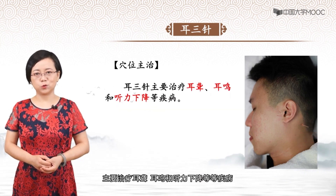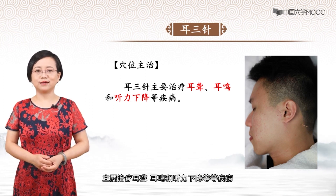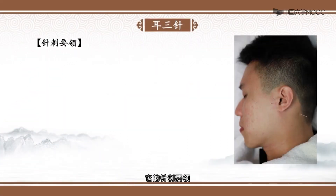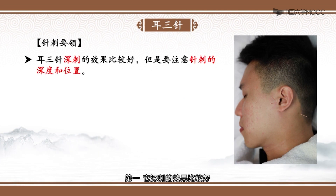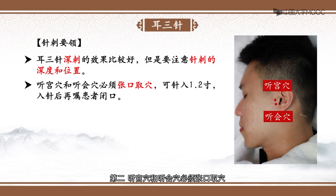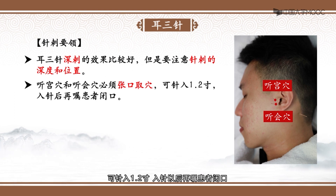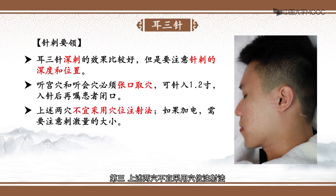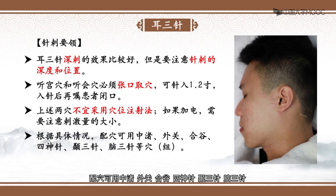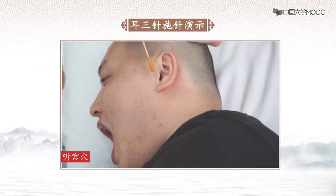耳三针的穴位主治：主要治疗耳聋、耳鸣和听力下降等疾病。针刺要领：第一，深刺的效果比较好，但要注意针刺的深度和位置。第二，听宫穴和听会穴必须张口取穴，可针入1.2寸，入针以后再嘱患者闭口。第三，少数两穴不宜采用穴位注射法。如果需要注意刺激量的大小。第四，根据具体情况，配穴可用中渚、外关、合谷、四神针、颞三针、脑三针等穴位或者处方。